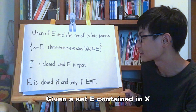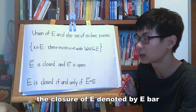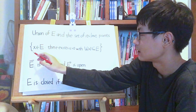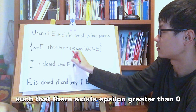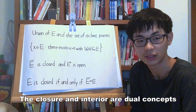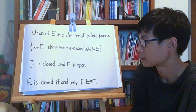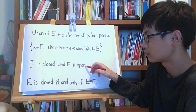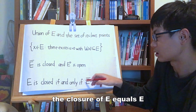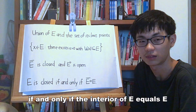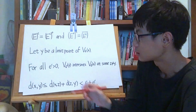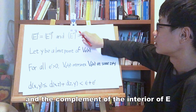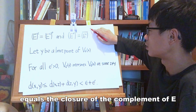Given a set E contained in X, the closure of E, denoted E-bar, is the union of E and the set of its limit points. The interior of E, denoted E-circle, is the set of x in E such that there exists epsilon greater than 0 with V_epsilon(x) contained in E. The closure and interior are dual concepts. The closure of E is closed, and the interior of E is open. E is closed if and only if the closure of E equals E, and E is open if and only if the interior of E equals E. The complement of the closure of E equals the interior of the complement of E, and the complement of the interior of E equals the closure of the complement of E.